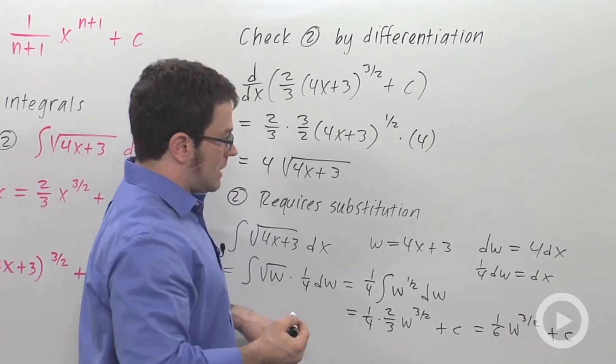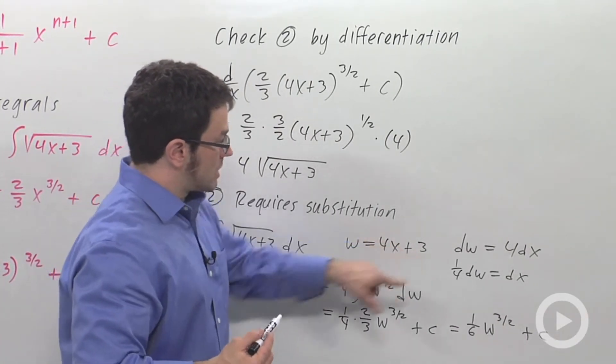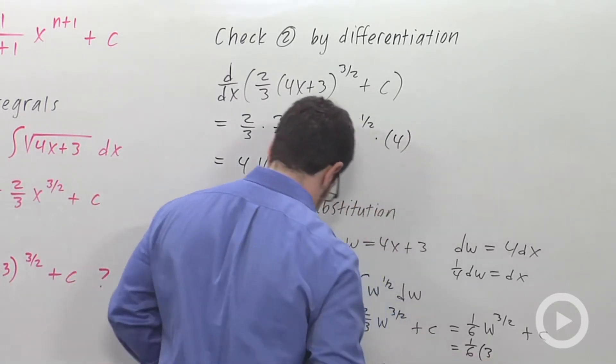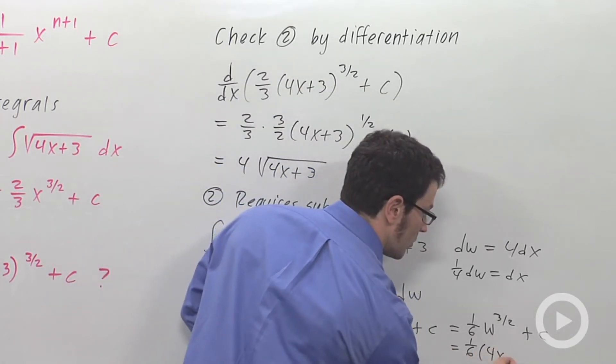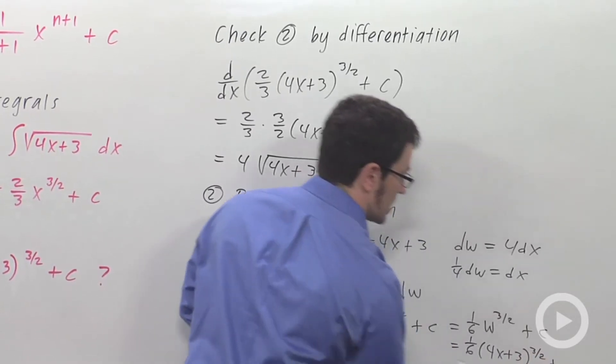And the last thing to do is resubstitute for w. I need to put 4x plus 3 in there. So this is 1 sixth, 4x plus 3 to the 3 halves plus c. That's my final answer.